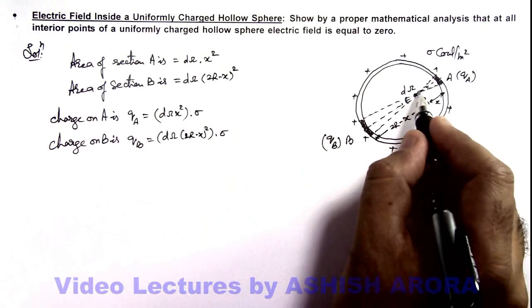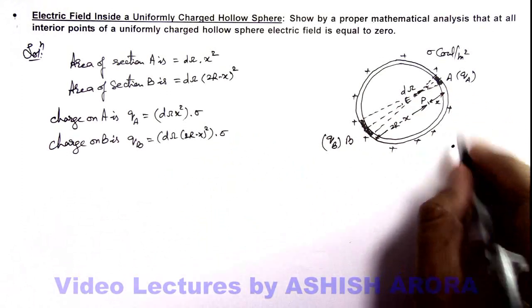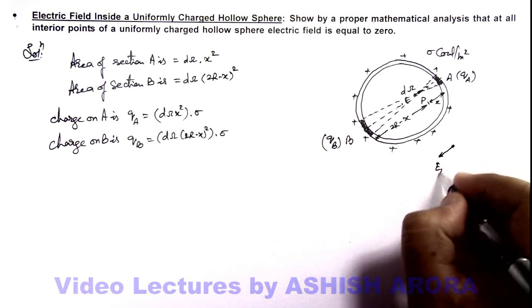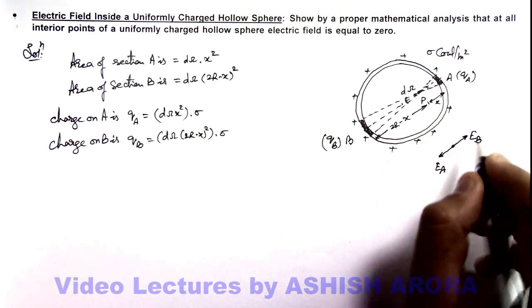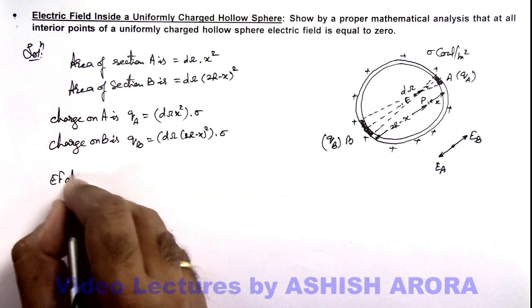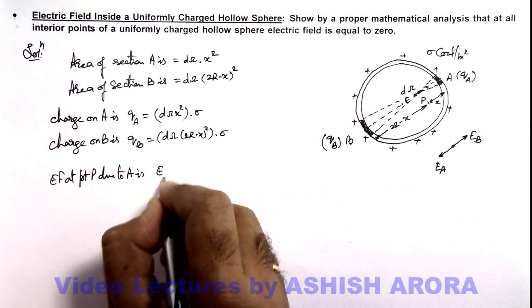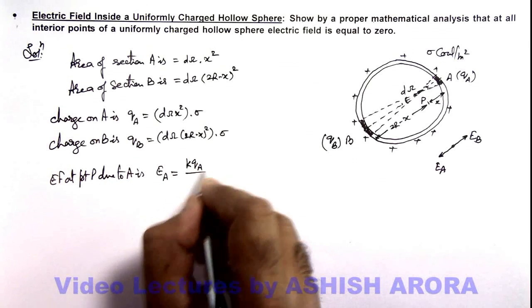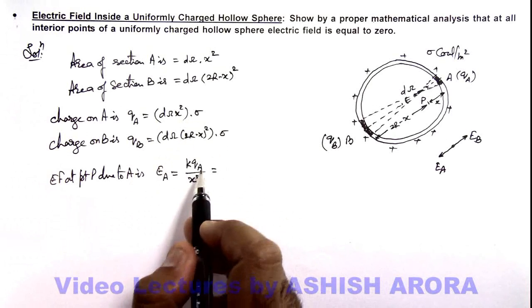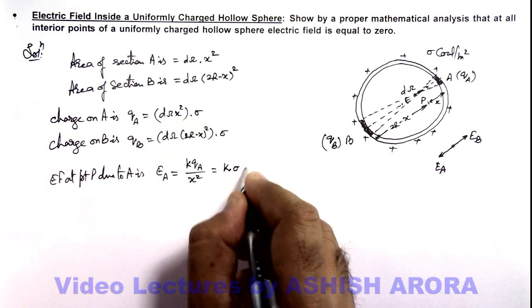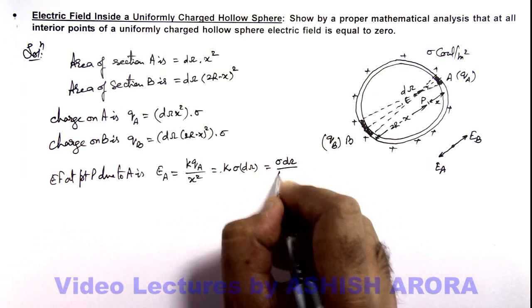Now if we calculate the electric field at point P due to A and due to B, these are in opposite directions. At point P, due to A the electric field will be in this direction, eA, opposite to A as it is positively charged. We can write electric field at point P due to A: eA = k·qA / x². And you can see if you substitute the value of qA, the x² gets cancelled out, so this gives us k·sigma·dω, which is sigma·dω / (4π·ε₀).